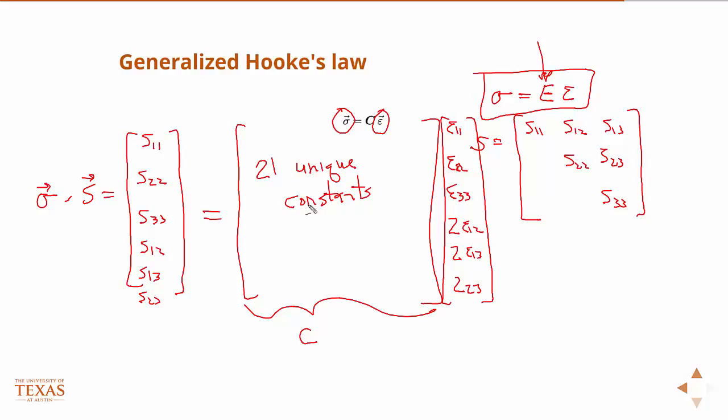And so it turns out, if the material has an infinite number of planes of symmetry, we can reduce it all the way down to two constants.